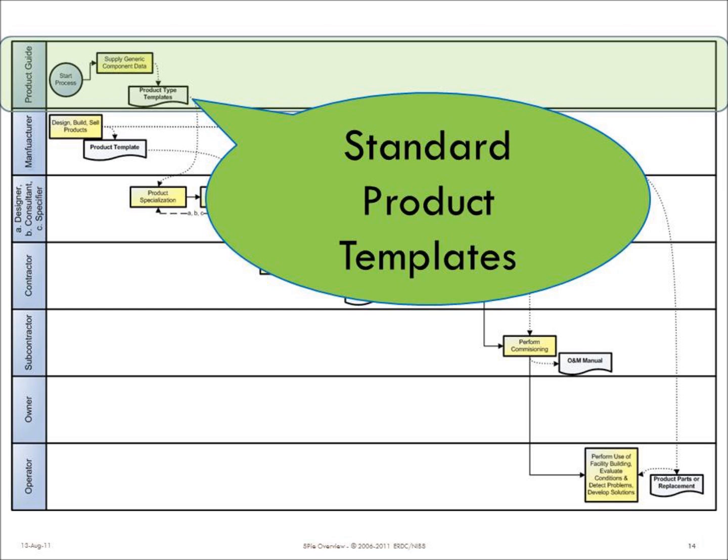The first place it's used is in the production of standard product templates. For a given type of product, we have a minimum required list of properties. These are properties that you would find in any kind of specification system that did performance-based specification of products. In addition, there can be differentiating properties that the manufacturer provides, but those aren't going to be in the template — the template is just the minimum set.